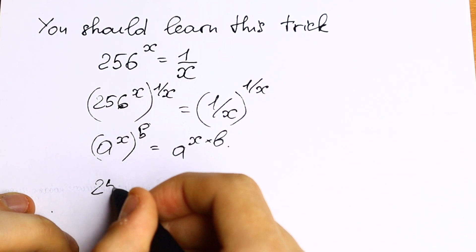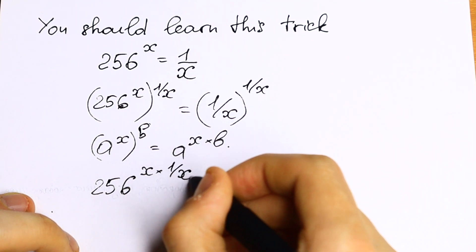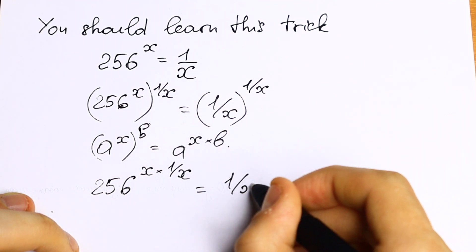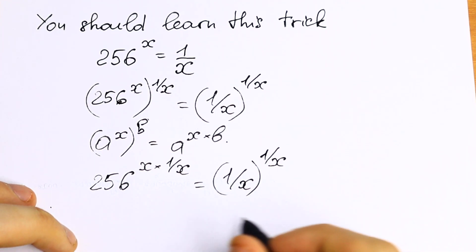We will have 256 to the power x times 1 over x equal to 1 over x to the power 1 over x. And as you can see, if we multiply x times 1 over x, it will be 1.